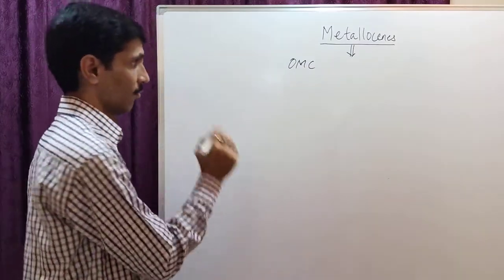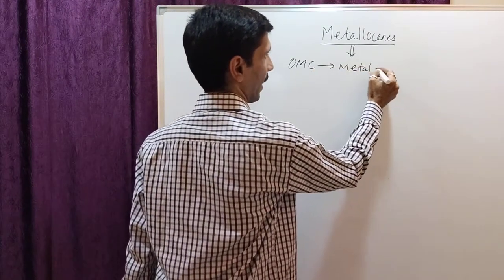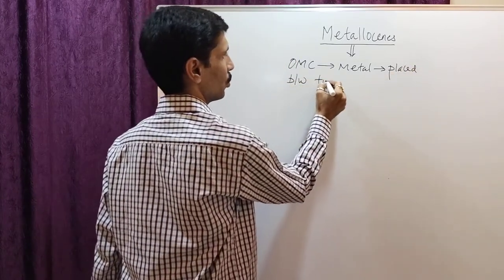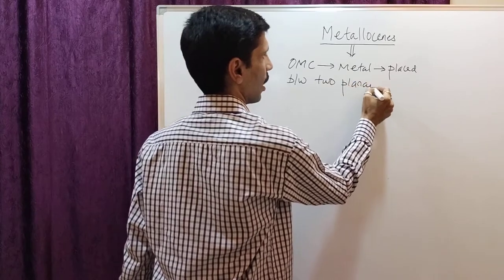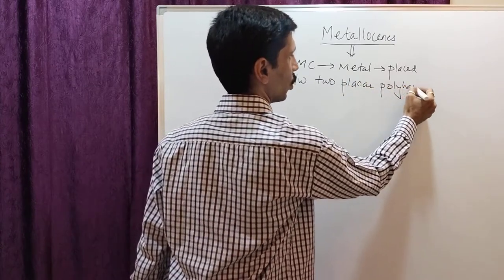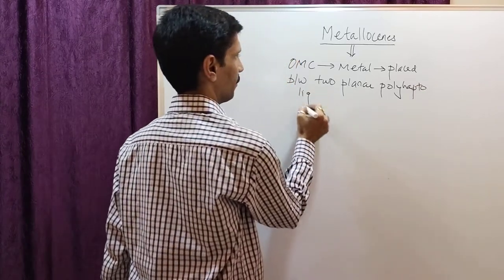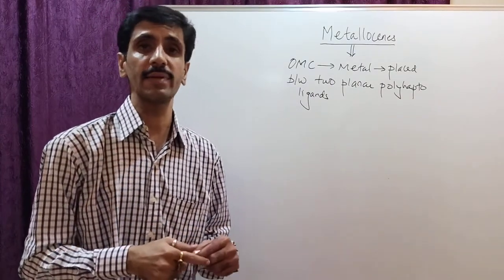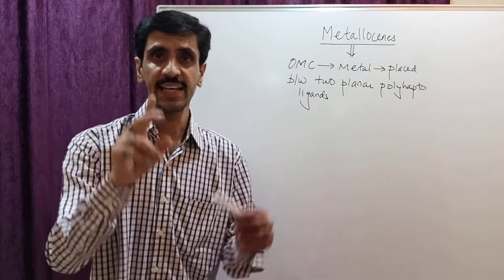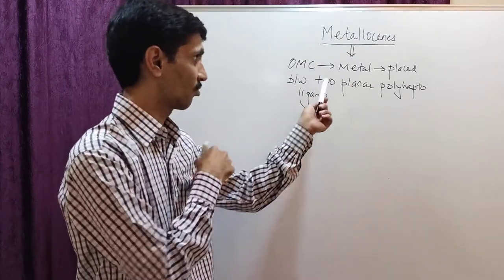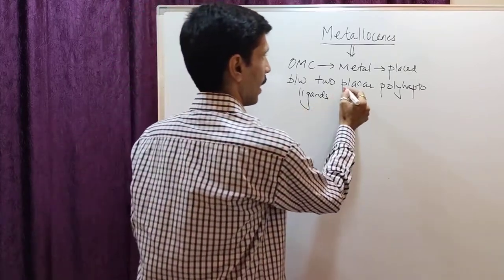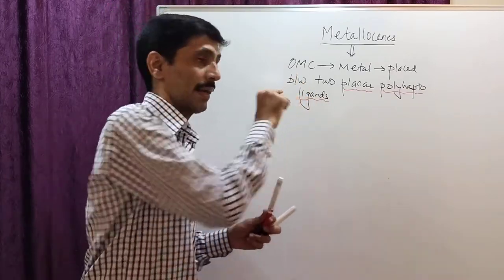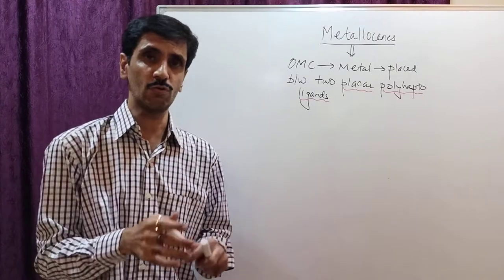Metallocenes are organometallic compounds in which the metal is placed between two planar poly-hapto ligands. Now the word 'ligands' will make you realize that yes, we are talking about complex compounds, because there is going to be a metal as well as a ligand.